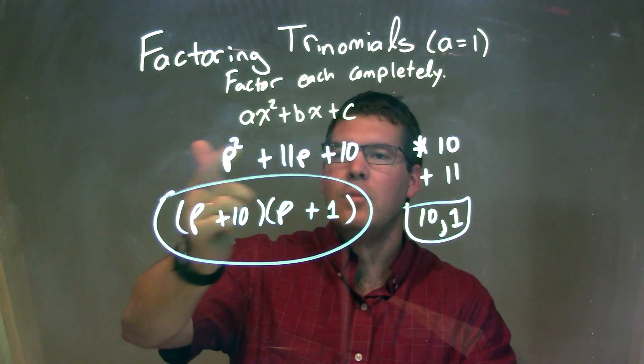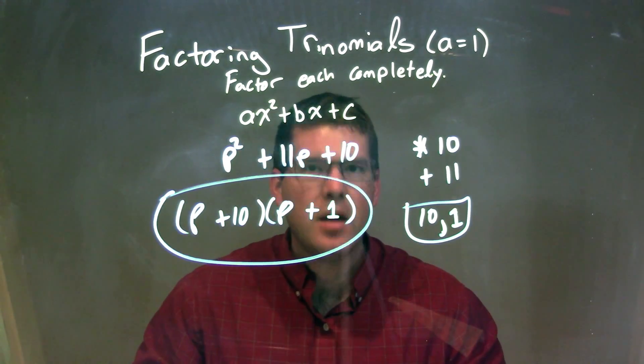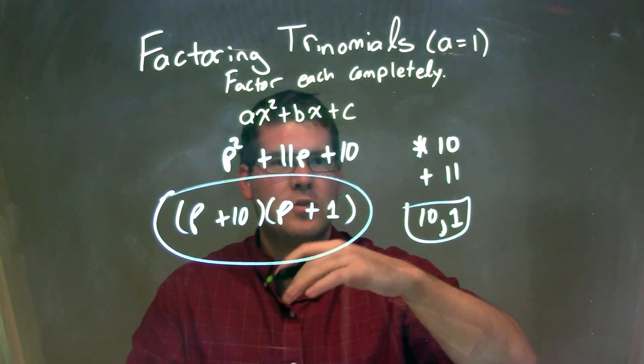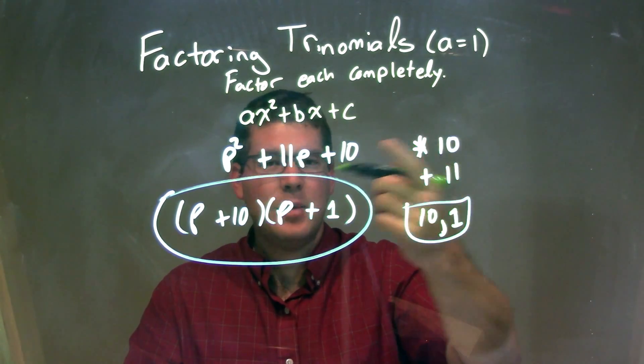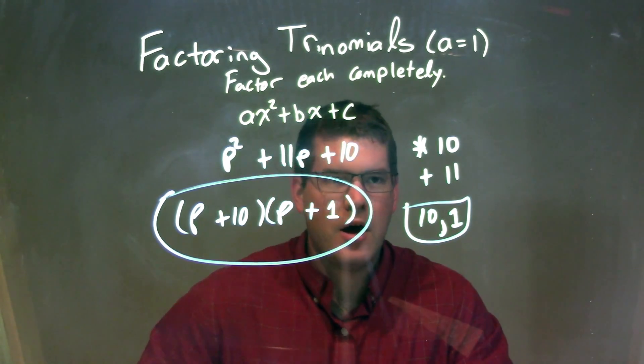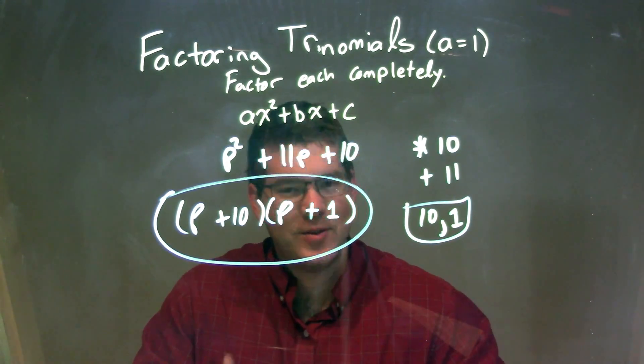So let's recap. We're given p squared plus 11p plus 10, and we need to factor that. So we've got an a value of 1, so we ask ourselves a question. What two numbers multiply to be c, which is 10, and add to be our b, which is 11? Those two numbers are 10 and 1. 10 times 1 is 10, and 10 plus 1 is 11.